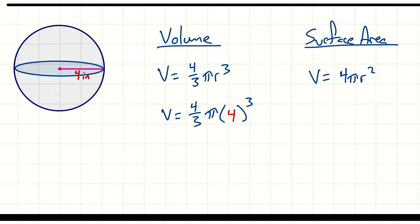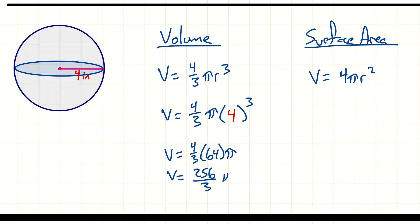Our first step is to calculate four cubed: four times four times four gives us 64. So volume equals four-thirds times 64 pi. Now I'm looking for four-thirds times 64. Since this could give a decimal, I would not write a decimal — especially since we're leaving pi in our answer. I'll multiply 64 times four, the numerator, which gives us 256. So this is 256 over 3 pi, with units of inches cubed.